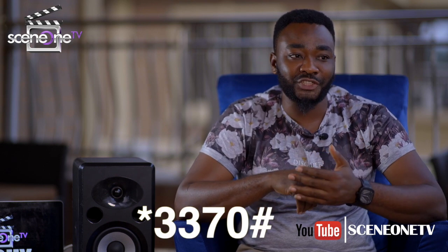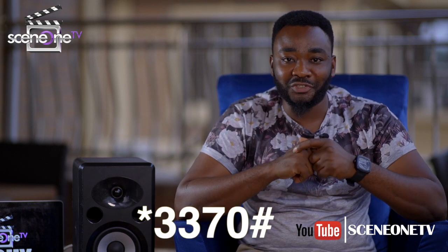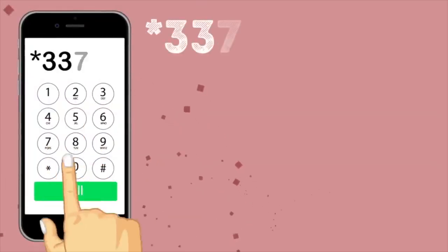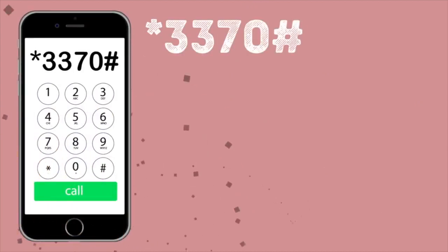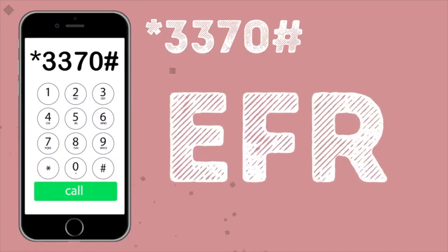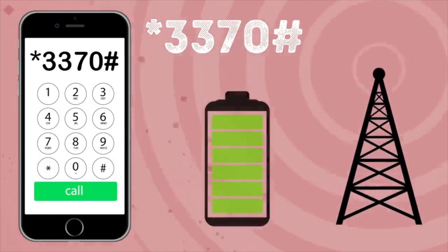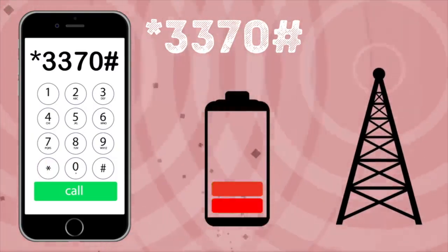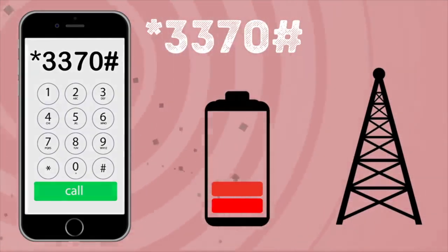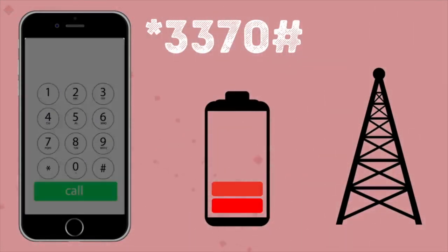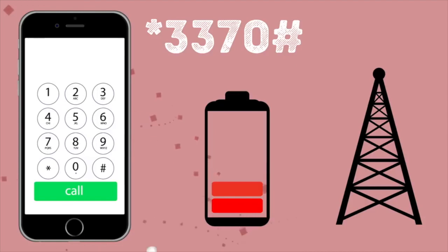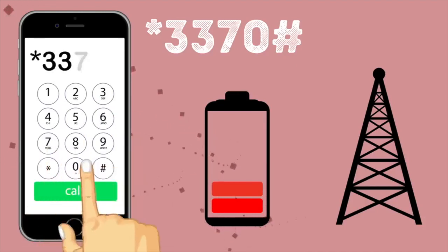Now for number five — if you type star three three seven zero hash, you're going to have better communication. This only works for iPhone. The combination star three three seven zero hash is available for iPhone users and helps turn on EFR coding to improve the quality of your network. Unfortunately, this reduces the battery life of your phone. If you activate this feature, you can always deactivate it by pressing star three three seven zero hash again.